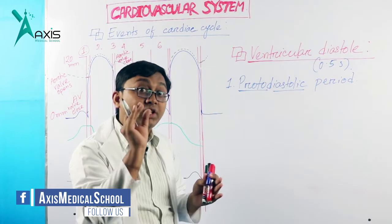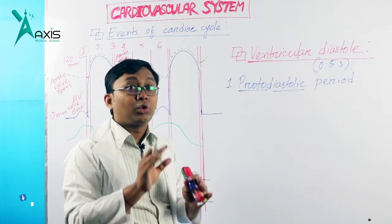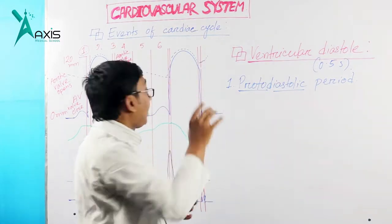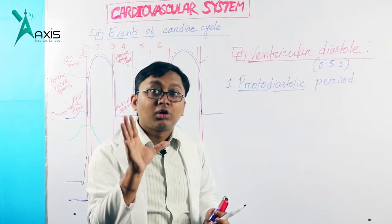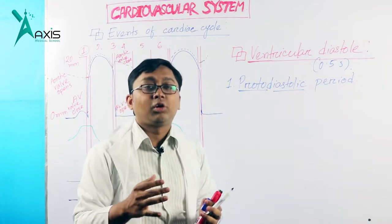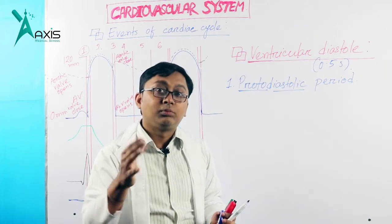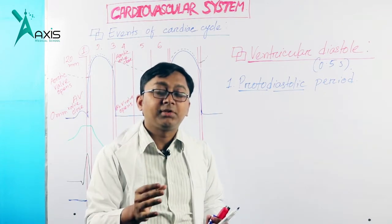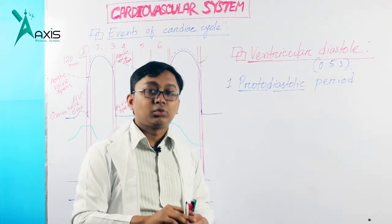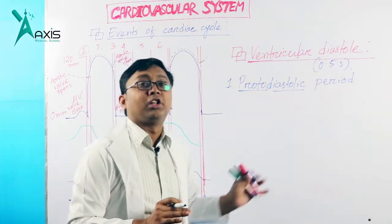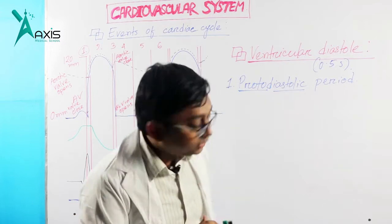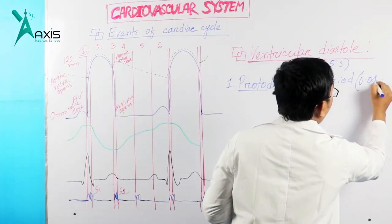The first phase is proto-diastole. In proto-diastole, the aortic valve closes. During this period, there is still blood flowing from the ventricle due to blood momentum — that is why it is called the proto-diastole period. Its duration is 0.04 seconds.